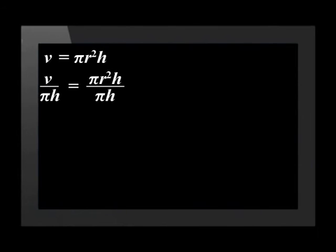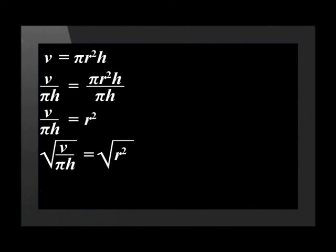Let me show you how. I can see that the R squared is joined to the pi and the H by multiplication. So, to get the R by itself, I need to divide both sides by the pi and the H. I am still left with R squared, and I need this to just be R. To get rid of the squared, I will square root both sides. The square root of R squared is R. Therefore, we have made R the subject of the formula. R is equal to the square root of V divided by pi times H.